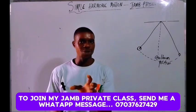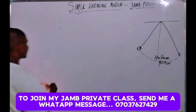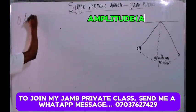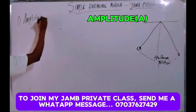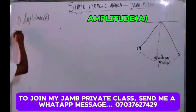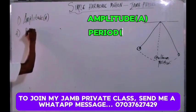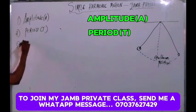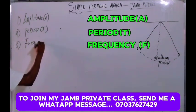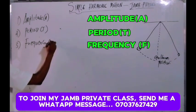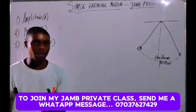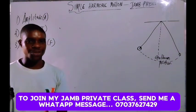When studying simple harmonic motion there are some terms to understand. The first one is called amplitude, number two is the period, and number three is frequency. So those are the three things you need to understand when it comes to simple harmonic motion.